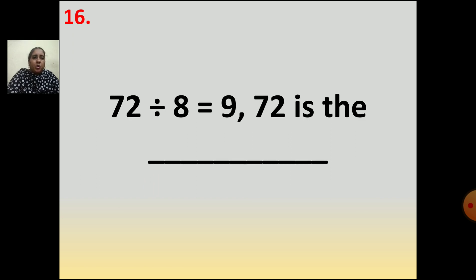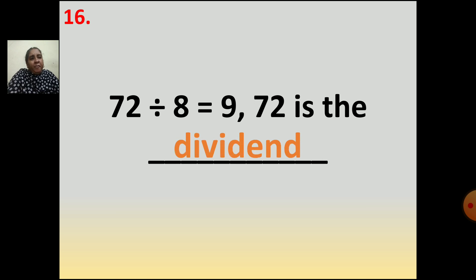Now the sixteenth question: 72 divided by 8 is equal to 9 — 72 is the dash. What is 72 in this question? 72 is the dividend. 8 is the divisor and 9 is the quotient. So 72 divided by 8 equals 9 — here 72 is the dividend. Thank you, children.